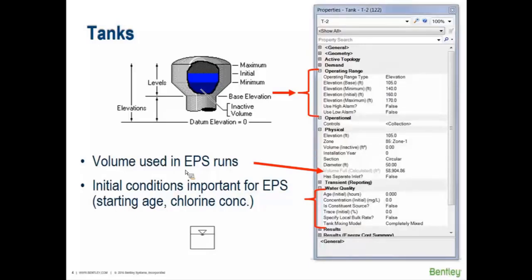When we get into water quality, you can enter the initial age in a tank and the initial concentration — perhaps chlorine concentration. Initial conditions in a water quality model really matter during a water age analysis because the water in a tank already has a particular age; it didn't start from zero. It might be two weeks old, one week old, or it has some chlorine level in it.